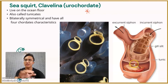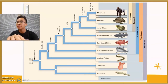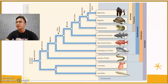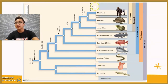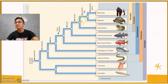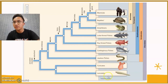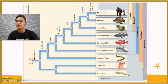Here is a phylogenetic tree of the chordates. As you can see, lancelets and tunicates are placed at the bottom of the tree. This means that tunicates and lancelets have no vertebrae, no jaws, no bony skeleton, no lungs, no limbs, no amniotic egg, and no mammary glands. They only possess the four basic chordate characteristics.